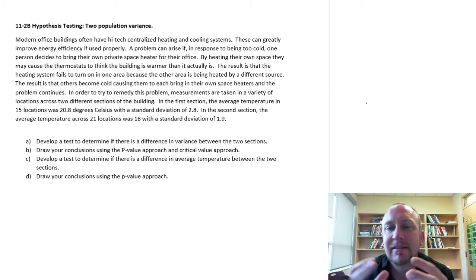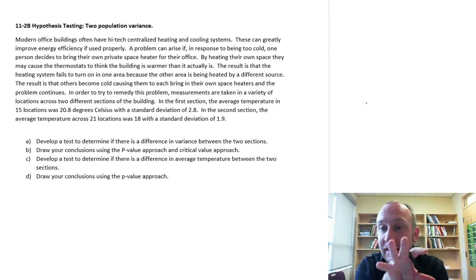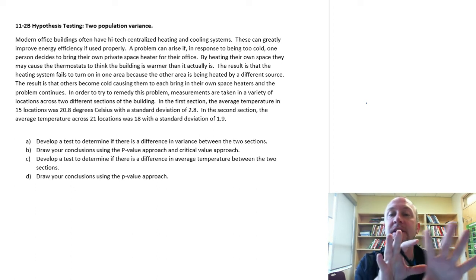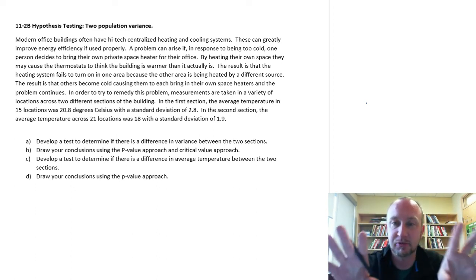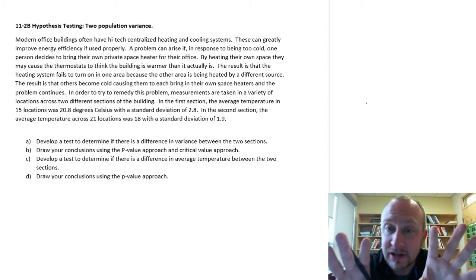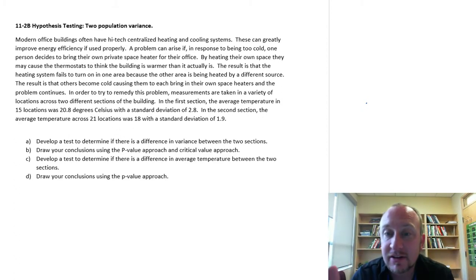Both of these tests give us different information about these two distributions. A test on means tells us where these distributions lie relative to one another, are their means the same, so are they sitting on top of each other, or is one greater than or less than the other. The test on variance tells us something about their relative shape, is one fatter or skinnier than the other, or are they about the same. So we're looking at tests on two different parameters, each one gives us slightly different information.